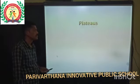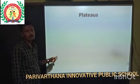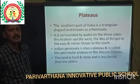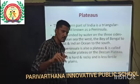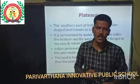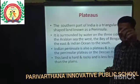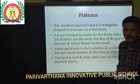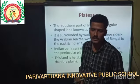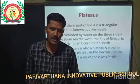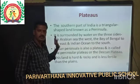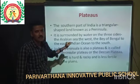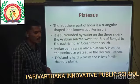The next topic is plateaus. The plateau is located in our country in a triangular shape. This triangular-shaped plateau is called a peninsula. Peninsula means the area surrounded by water on three sides. In the west is the Arabian Sea, in the east is the Bay of Bengal, and in the south is the Indian Ocean. That is why it is called a peninsula.